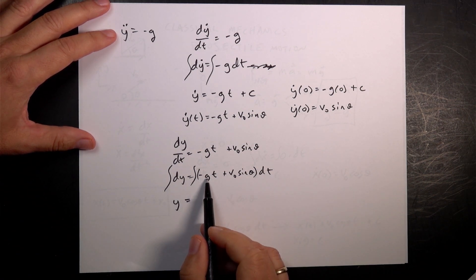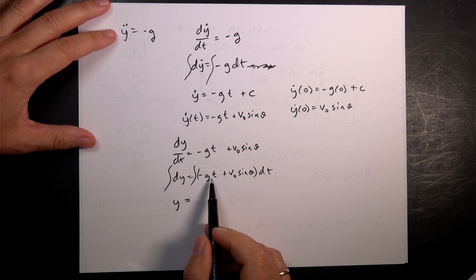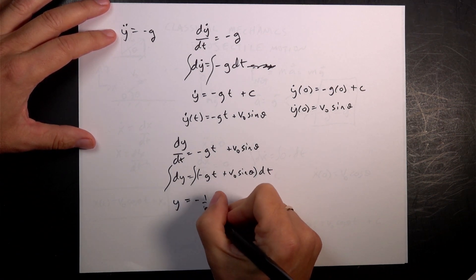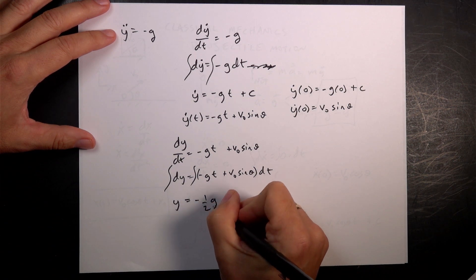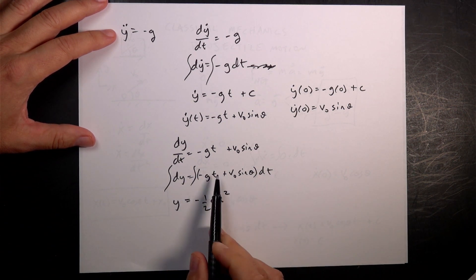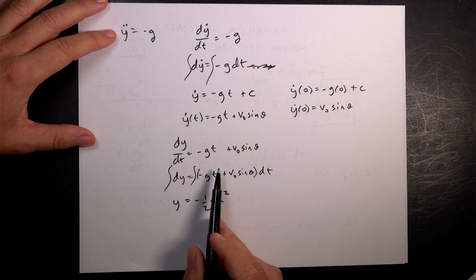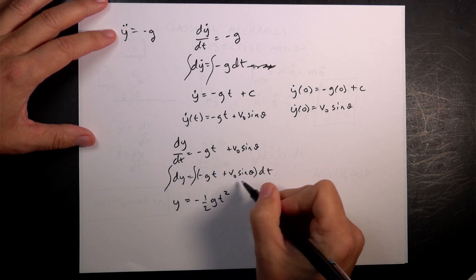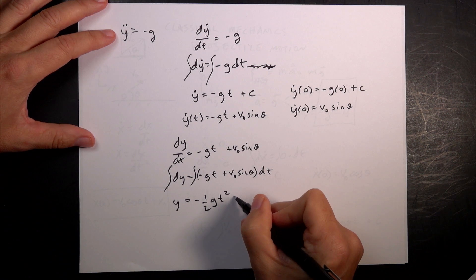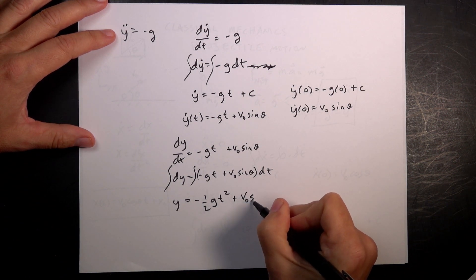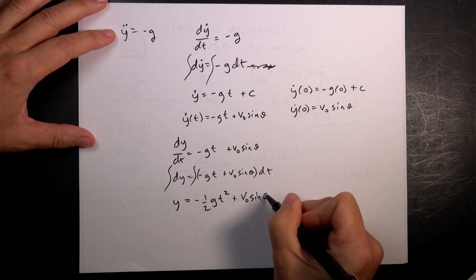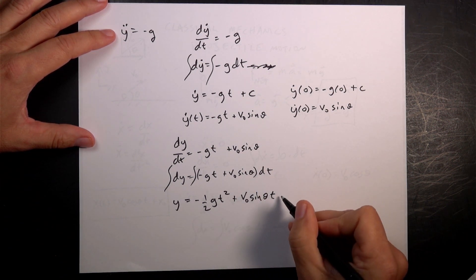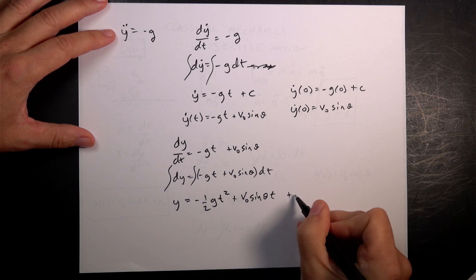The integral of negative g t is going to be negative one half g t squared, because this is to the first power — I raise the exponent by one and divide by that, which is how I get the one half. Then I integrate the next term to get plus v zero sine theta times t. And then I have another constant c.